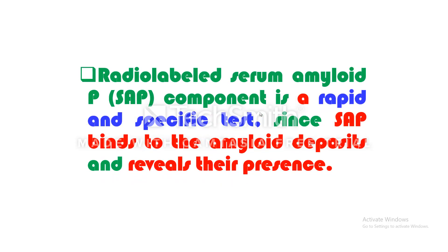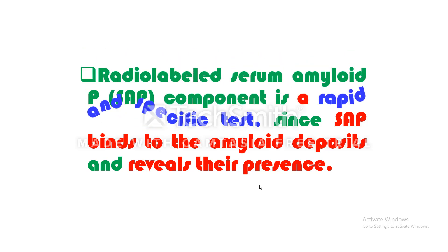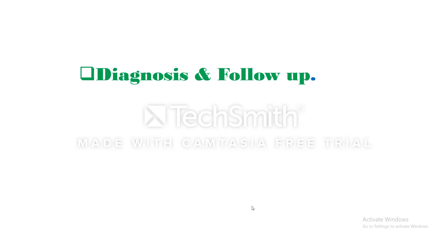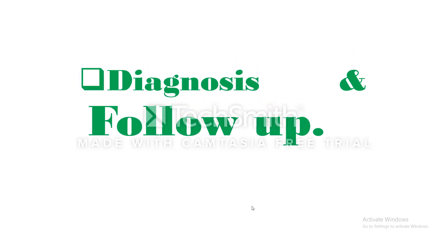Radiolabeled serum amyloid P-component (SAP) is a rapid and specific test. SAP binds to amyloid deposits and reveals their presence. It gives us an idea about the extent and site of amyloid deposition, and it is helpful as a measure of the extent of amyloidosis. It can also be used to follow up patients undergoing treatment — making it very useful for both diagnosis and follow-up.